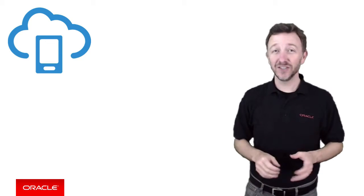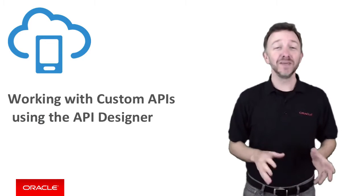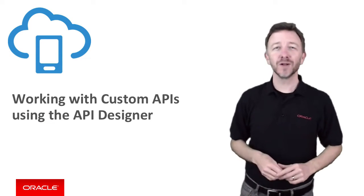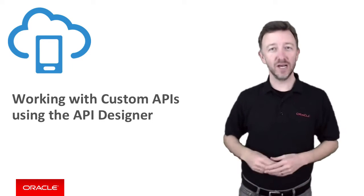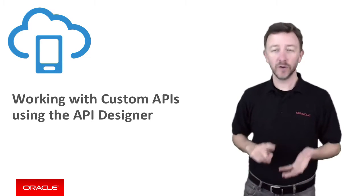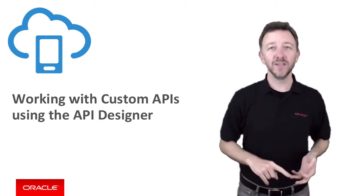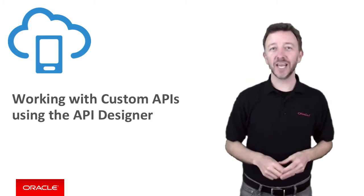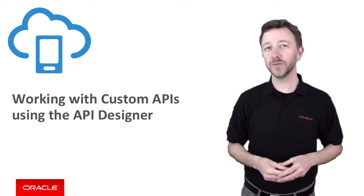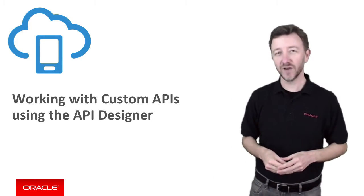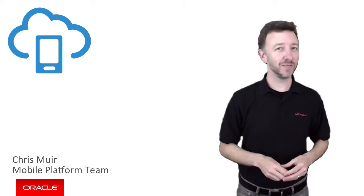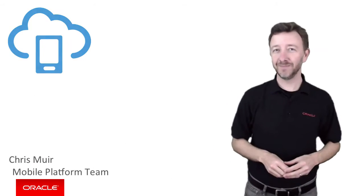G'day. Now the pressure's on today. We've been tasked as mobile developers in Oracle Mobile Cloud Services to define REST APIs for a new custom API. We already know REST, we know RAML, and in this episode we're going to check out how to build out the REST interface of a custom API using the MCS user interface. Thanks for joining us. I'm Chris Muir from the Oracle Mobile Platform team.